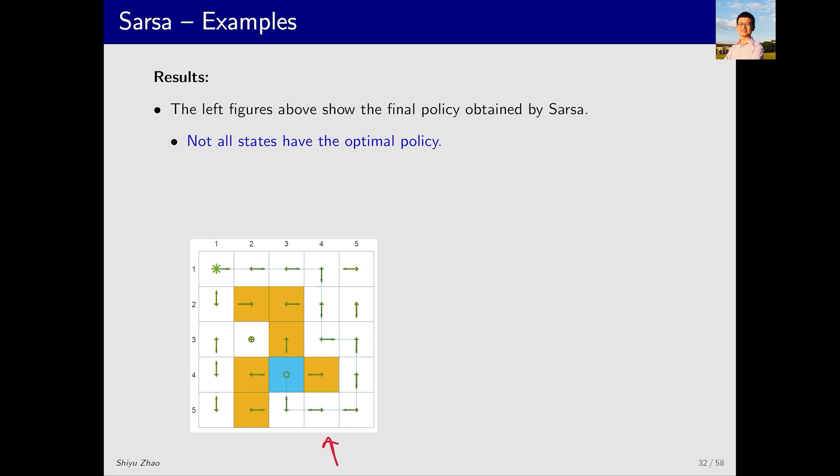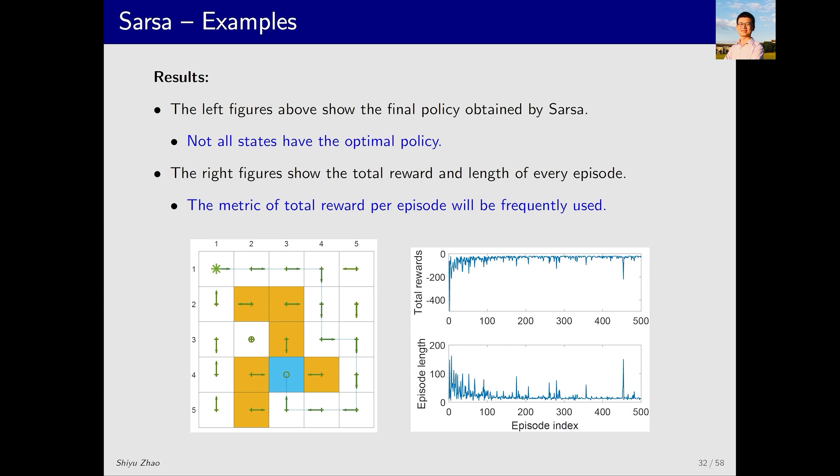This is the optimal policy found by SARSA, starting from an initial policy. The initial state is the top left corner. If we follow the direction with the highest probability, we can reach the target, indicating that we have achieved our objective. However, as I mentioned earlier, many other states do not have an optimal policy yet. Is it possible that the found path is not the shortest or optimal? Could the optimal path be in unexplored areas? This is possible. It depends on whether you want to find the optimal policy for all states or just a feasible path from a state to the target. If you want to find the optimal policy for all states, you must explore all state action pairs.